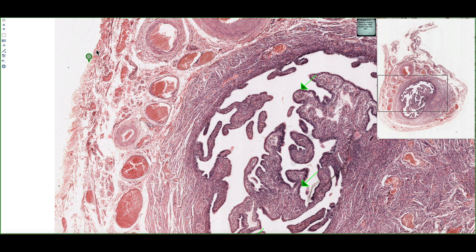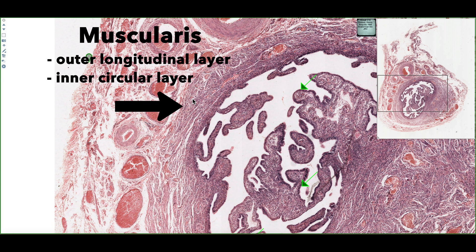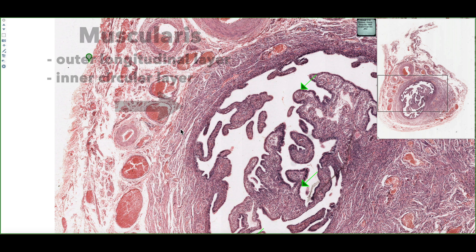Just deep to the serosa, we can see loose connective tissue filled with blood vessels. Just deep to this loose connective tissue, we come to the second major layer — the muscularis. It should be composed of an outer longitudinal layer and an inner circular layer, but in this case it looks rather indistinct as to where the boundaries of these smooth muscle layers are.